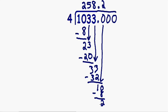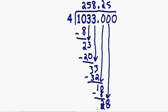So now I'm going to bring down my number 0. How many times does 4 go into 20? 4 goes into 20 five times. 4 times 5 is equal to 20. If we subtract these two numbers, now we have a remainder of 0. 20 minus 20 is equal to 0. Now that we have a remainder of 0, we are finished with this problem.